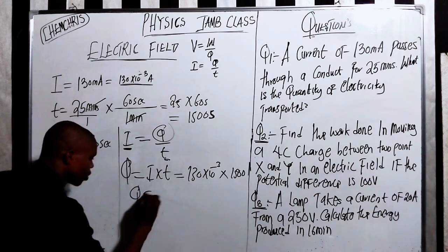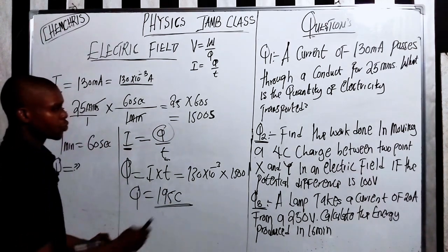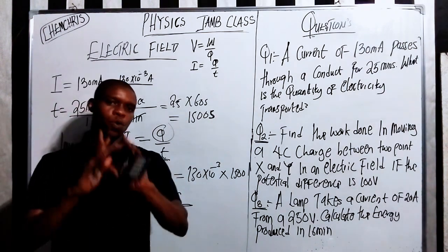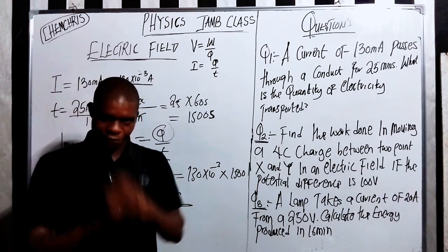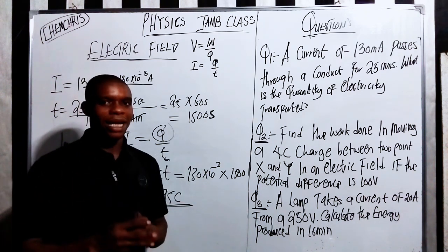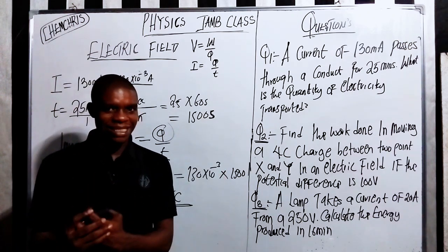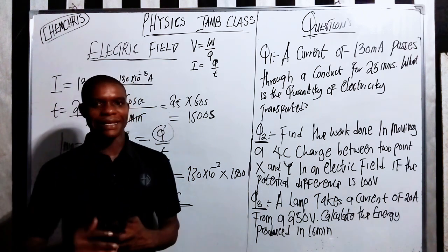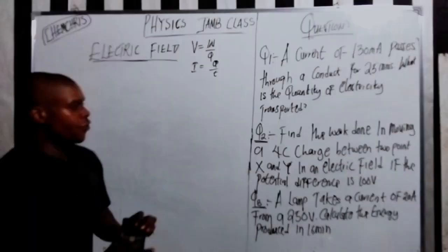So the quantity Q equals 195 coulombs. That is the answer. If this video is helpful, please give it a like and subscribe to the channel. Kindly share this video with your friends who are preparing for the JAM exam so they can also benefit. Now let's move to question two.